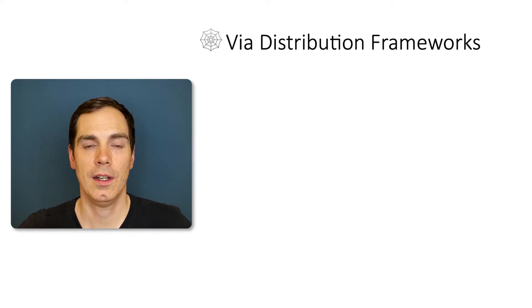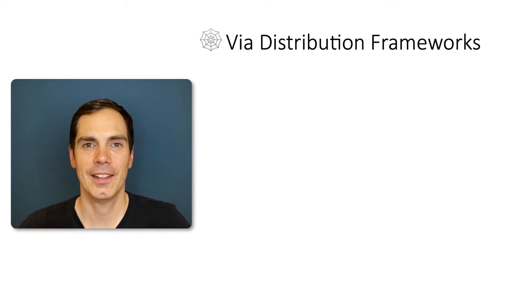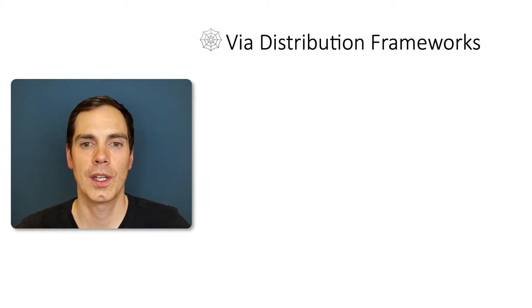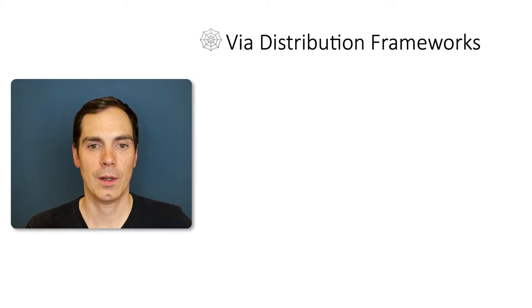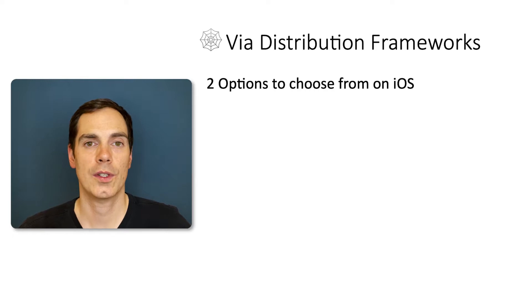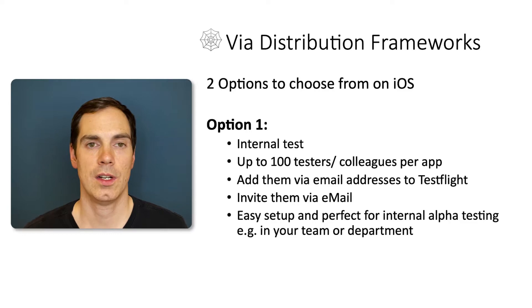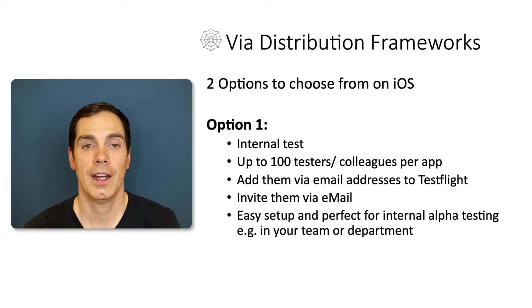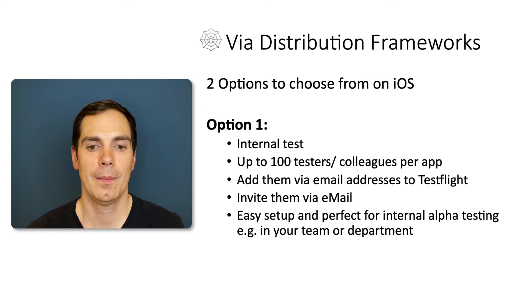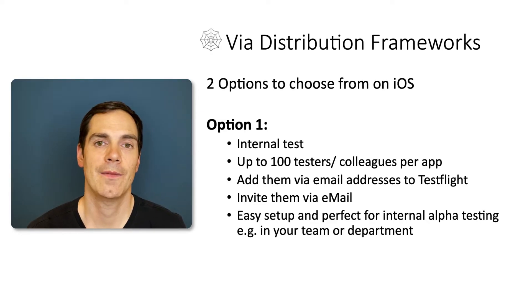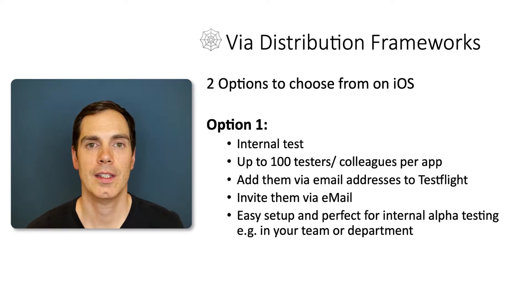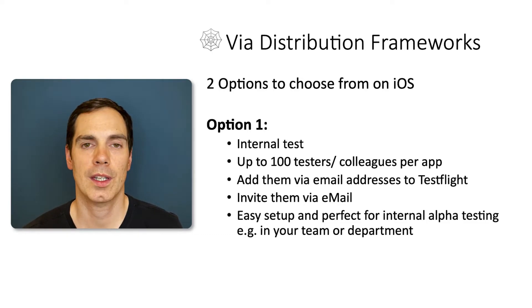So how do you build a beta testing community on iOS? It's much easier on Android than on iOS. On iOS, Apple doesn't provide many built-in tools, so you have to use so-called distribution frameworks. You have two main options. Option one is an internal test where you can invite up to 100 testers or colleagues per app, invited via email addresses to TestFlight — the framework Apple acquired and integrated into their development tools.